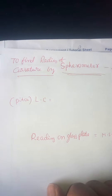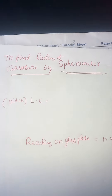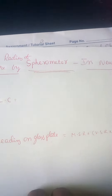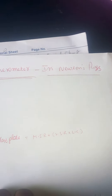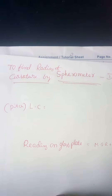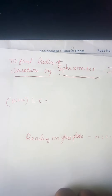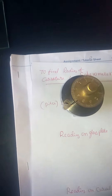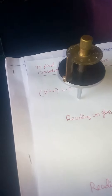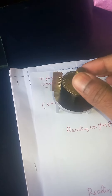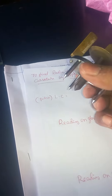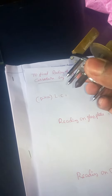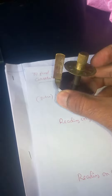Good morning. This is a class where you have to find out how to find the radius of curvature by spherometer in Newton's rings experiment. So how to find out the radius of curvature in a spherometer. You have to observe the spherometer here — it has a head scale, a pitch scale, three legs, and one screw. This is the arrangement you have to find out the radius of curvature.